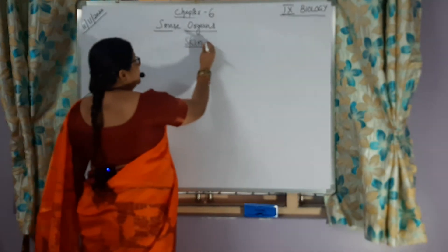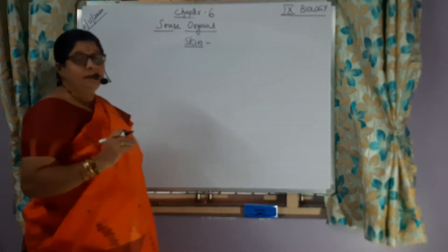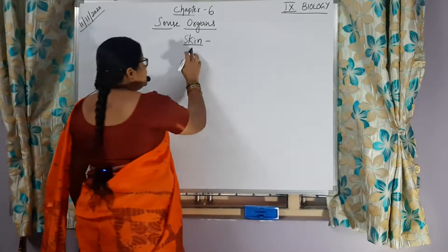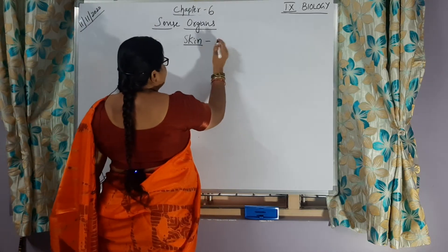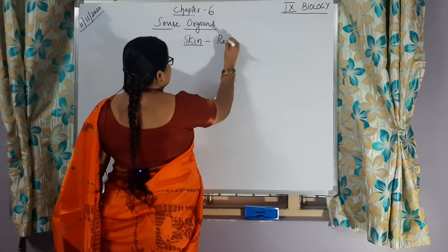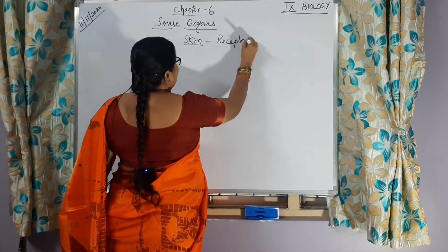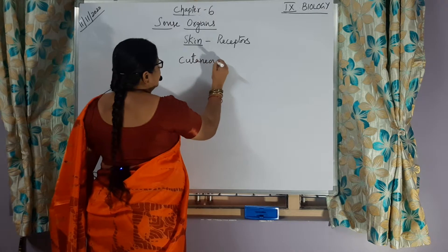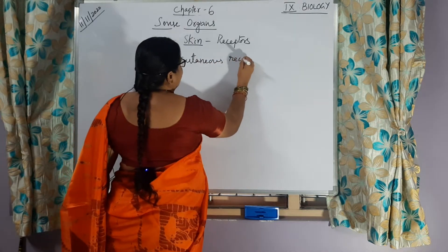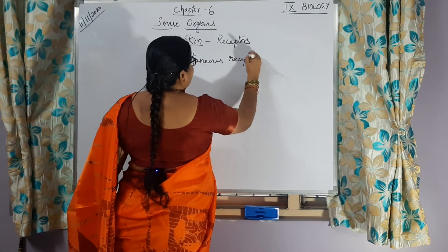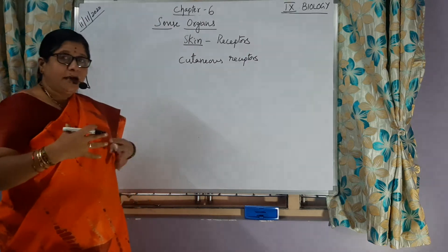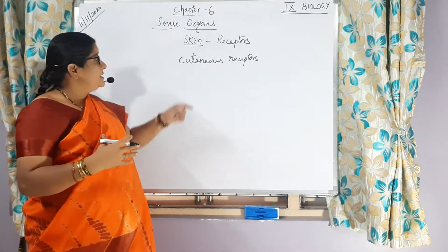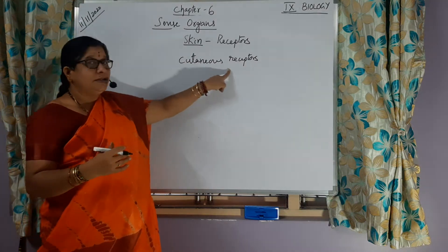Skin contains the receptors for touch. The different types of receptor cells which are present in the skin are called cutaneous receptors.